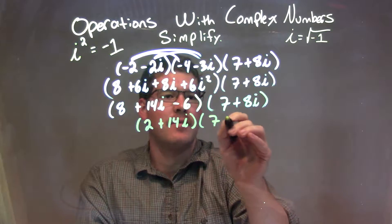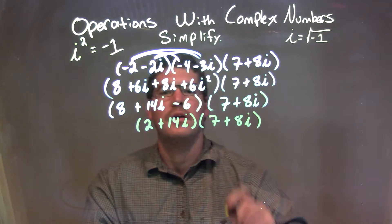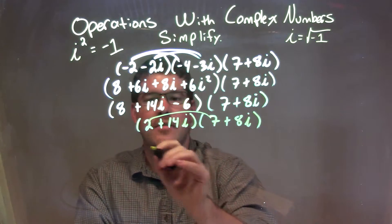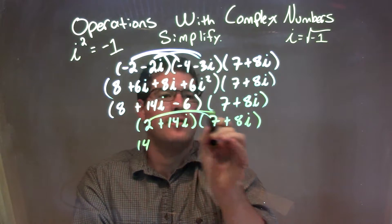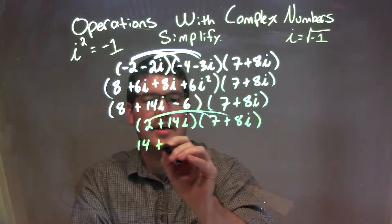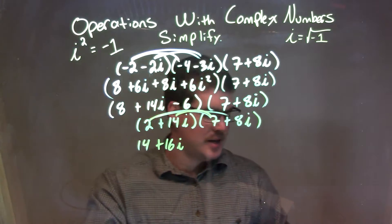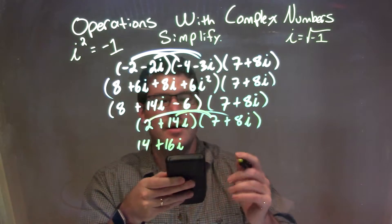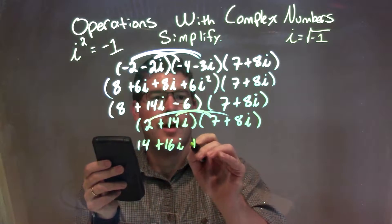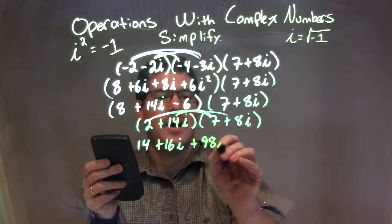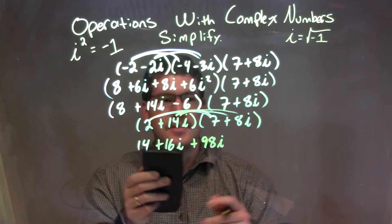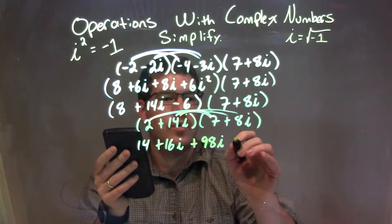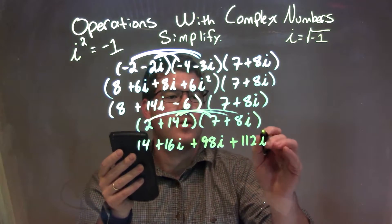And now that's going to be multiplied by 7 plus 8i. So now I'm going to multiply these two together. 2 times 7 is 14, and 2 times 8i is 16i. Now 14i times 7 — 14 times 7 is 98, so we have a positive 98i.